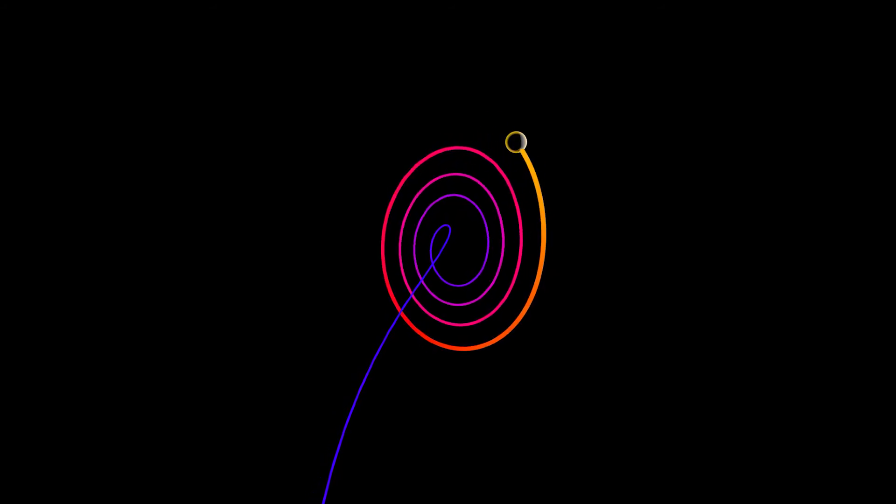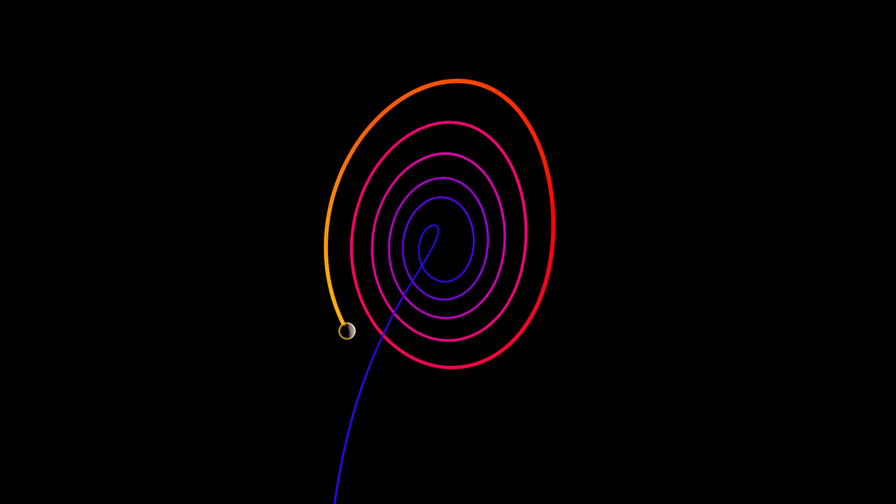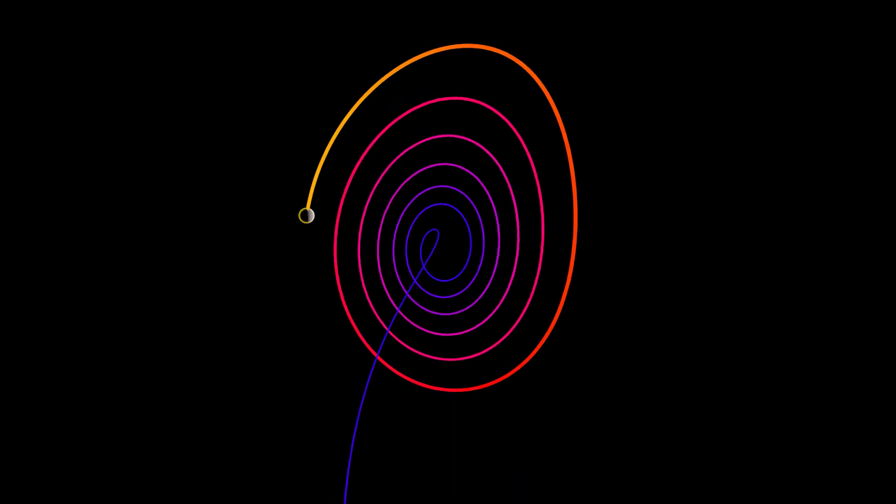If we start off with an initial condition that's really close to that saddle point, then it follows along the unstable eigenspace. It gets ejected way out and lands very close to one of the unstable spirals. It starts spiraling out. Everything looks normal.